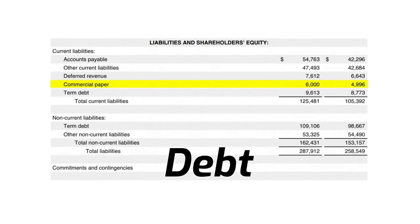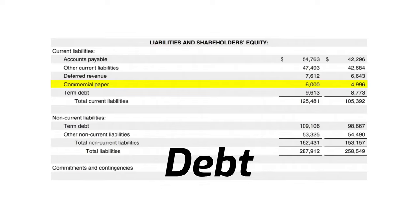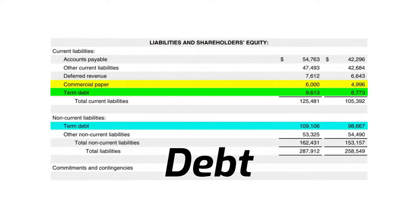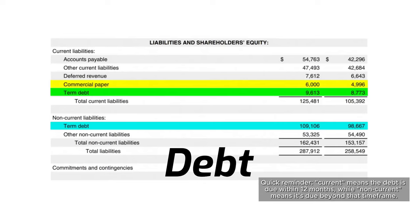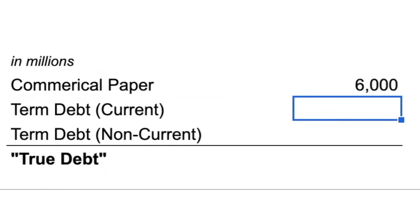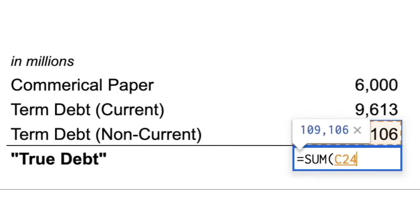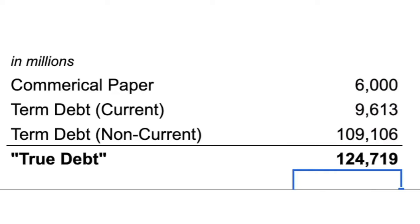Moving on to commercial paper — it's super short-term debt, usually around 30 days, used by companies to cover daily operational expenses like payroll and supplier payments. Now we're diving into the most critical aspect of analyzing a balance sheet: understanding its debt. Apple's debt breaks down into three categories: commercial paper, the current portion of term debt, and the non-current portion of term debt. Combining $6,000 in commercial paper, $9,613 of current debt, and $109,106 of non-current debt, we arrive at Apple's total debt of $124,719 — all figures in millions.